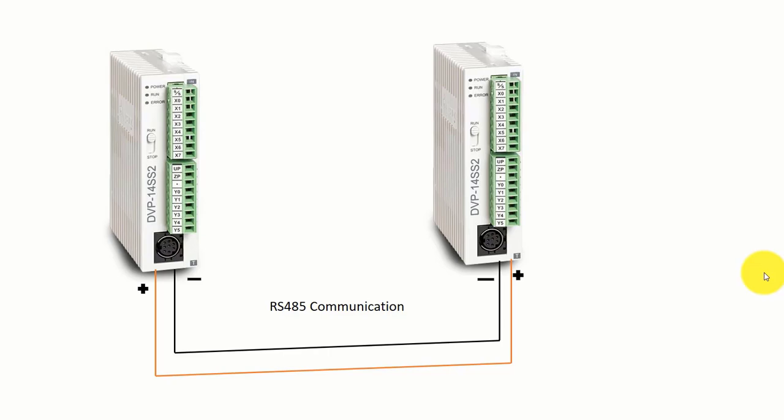Hello friends, today our topic is communication between two PLCs. In this picture you can see two Delta PLCs and we will communicate with each other using RS485 communication protocol. By RS485 communication you can communicate between PLCs over around one kilometer distance. So let's start - first we have to go to WPL software.